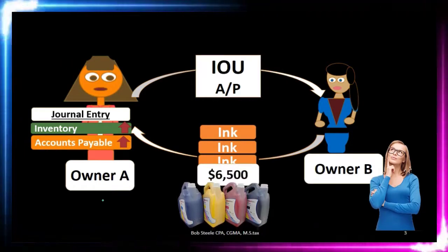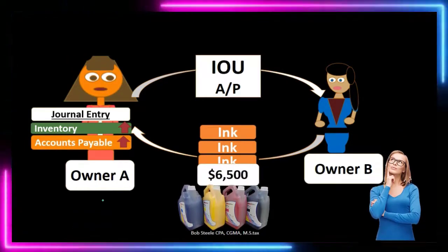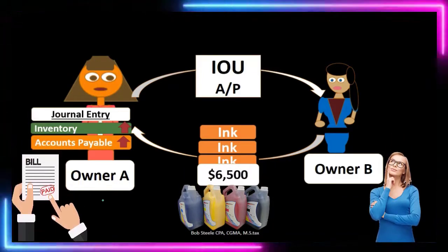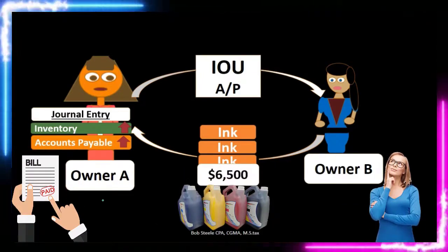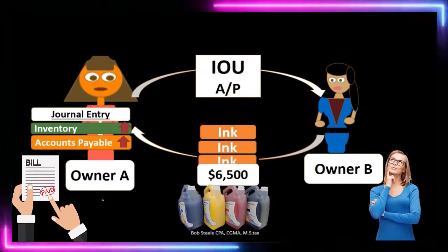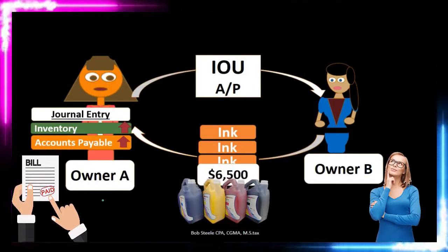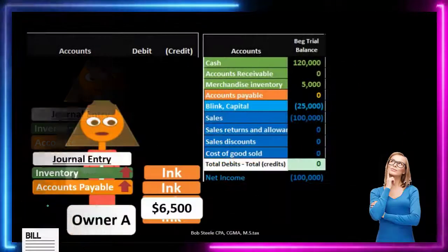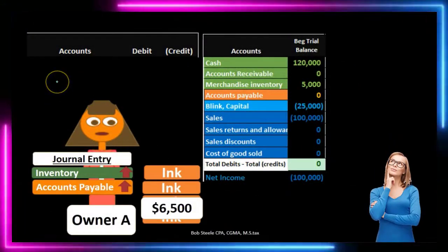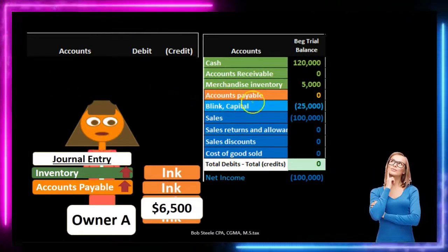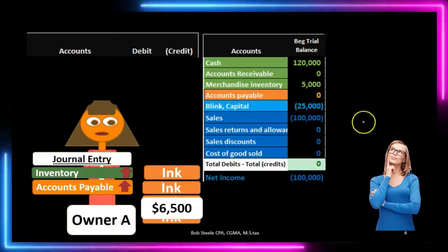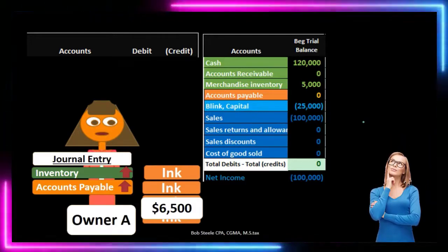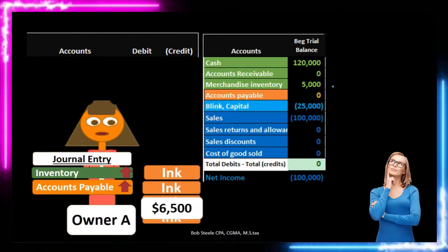We're also going to record the fact that we have accounts payable at this point. When we got the ink, it probably came with a bill. We matched the bill to the purchase order to see that we got what we were expecting to get, and now we can record the fact that we owe this money for the inventory that we have received. Let's take a look at the debits and credits. We're going to record the journal entry on the left-hand side of the trial balance to see the impact on the trial balance accounts. Inventory is a debit balance account and we need to make it go up.